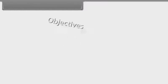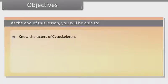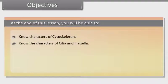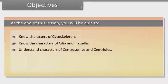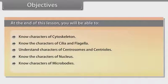Objectives. At the end of this lesson, you will be able to: know the characters of cytoskeleton; know the characters of cilia and flagella; understand characters of centrosomes and centrioles; know the characters of nucleus; and know characters of microbodies.